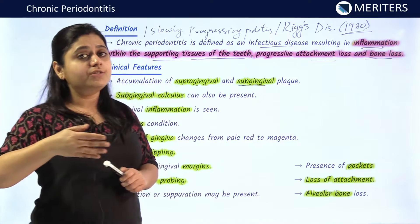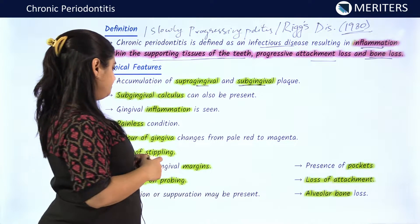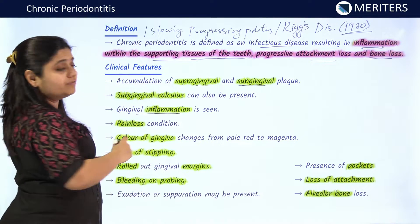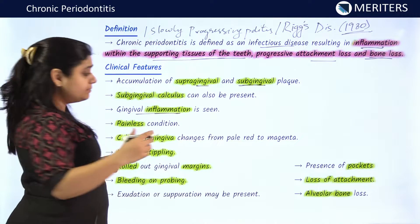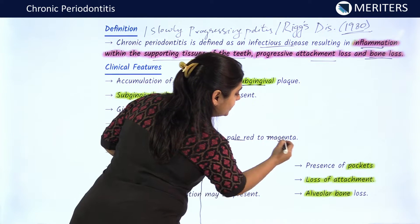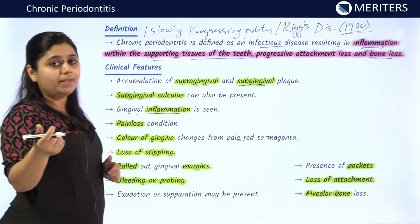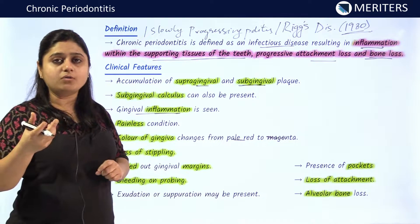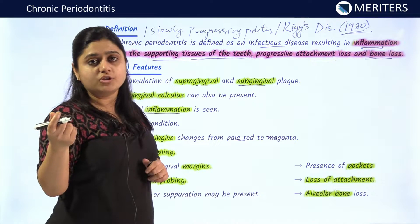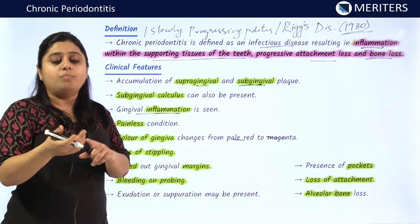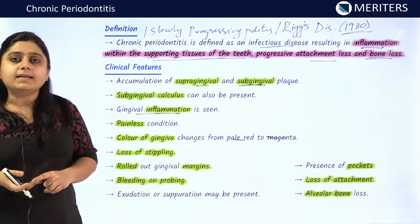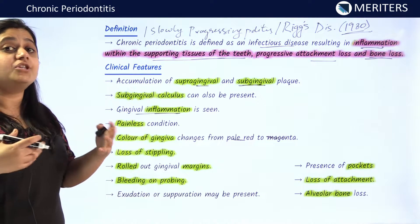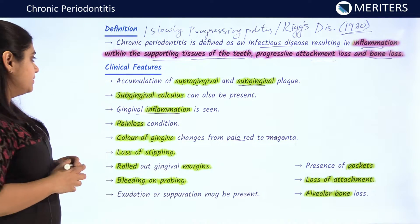The color changes from coral pink to deep red, and various gingival inflammation is seen. The color of the gingiva becomes from pale red to magenta. It bleeds easily on probing. The patient may complain of foul smell from the mouth. There may be suppuration from the gingiva, recession of the teeth, mobility, and furcation involvement. These are the various complaints which the patient comes to the dentist with.